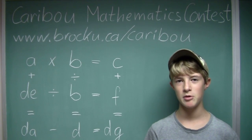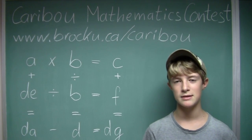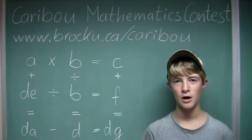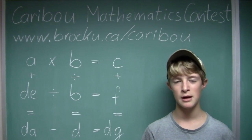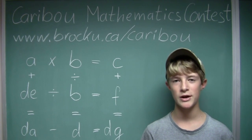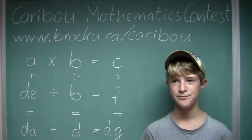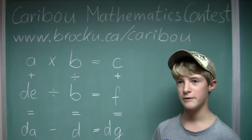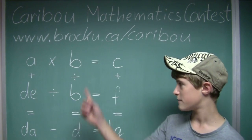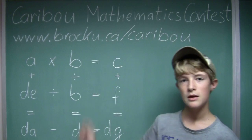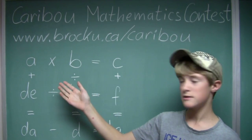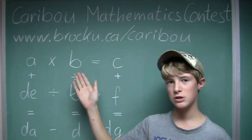Hi, this video is about the Caribou Mathematics contest in Canada. I'm going to show the solution for the October 12, 2011, Grade 7-8 contest, Question 17. So there are different letters for different digits in this formula. The question is, what is the value of each letter?